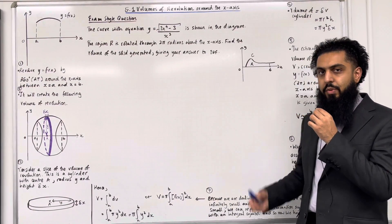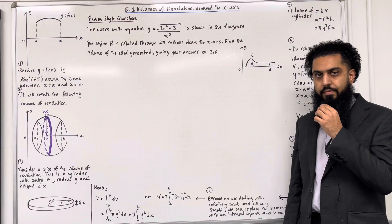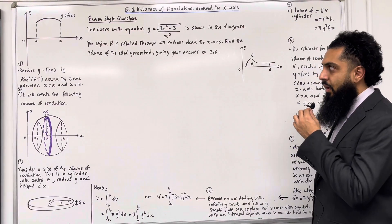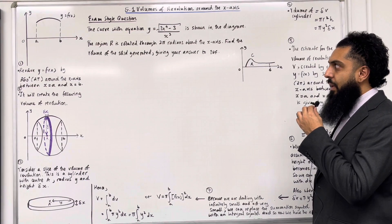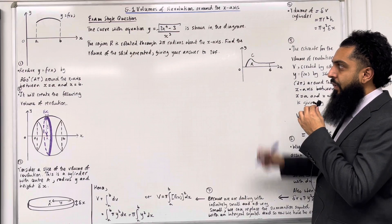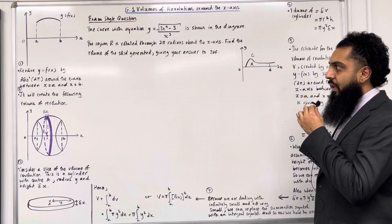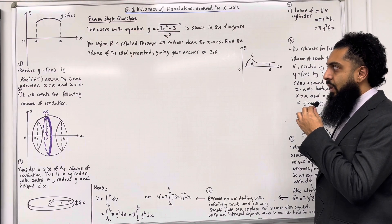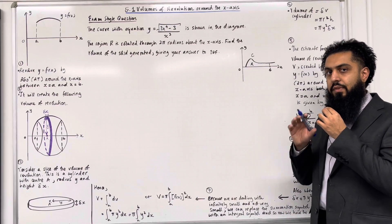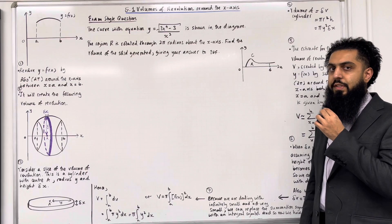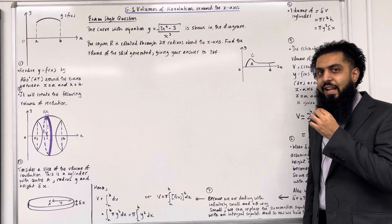I'll be implementing these key facts in two exam-style questions. Here is the first exam-style question. The curve with equation y equals square root of (3x to the power 4 minus 3) all over x cubed is shown in the diagram. The region R is rotated through 2 pi radians about the x-axis. Find the volume of the solid generated, giving your answer to three significant figures. We have to round our volume to three significant figures. Let's have a look at the solution.